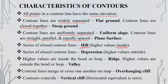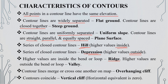In the outside portion, lower values are shown. In a depression, contour lines are also closed. Higher values are indicated on the outer side and lower values on the inside portion. In the ridge case, the contours form a loop, with lower values on the outside.